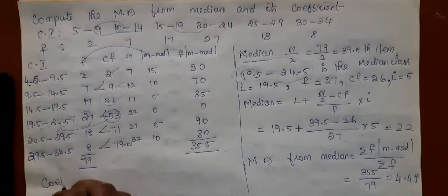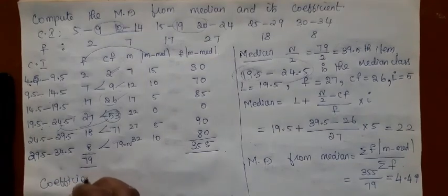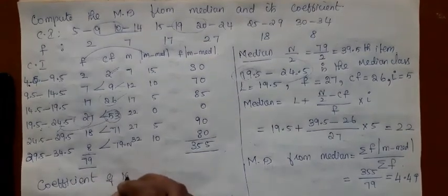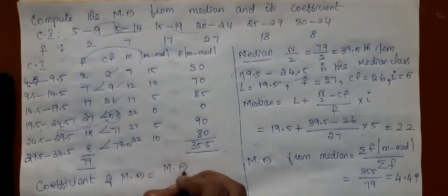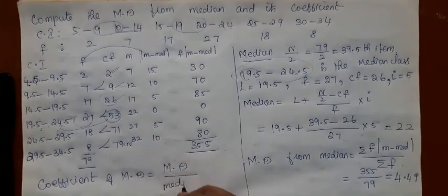Now let us compute coefficient of mean deviation. The formula is mean deviation divided by the measure from which it is computed.